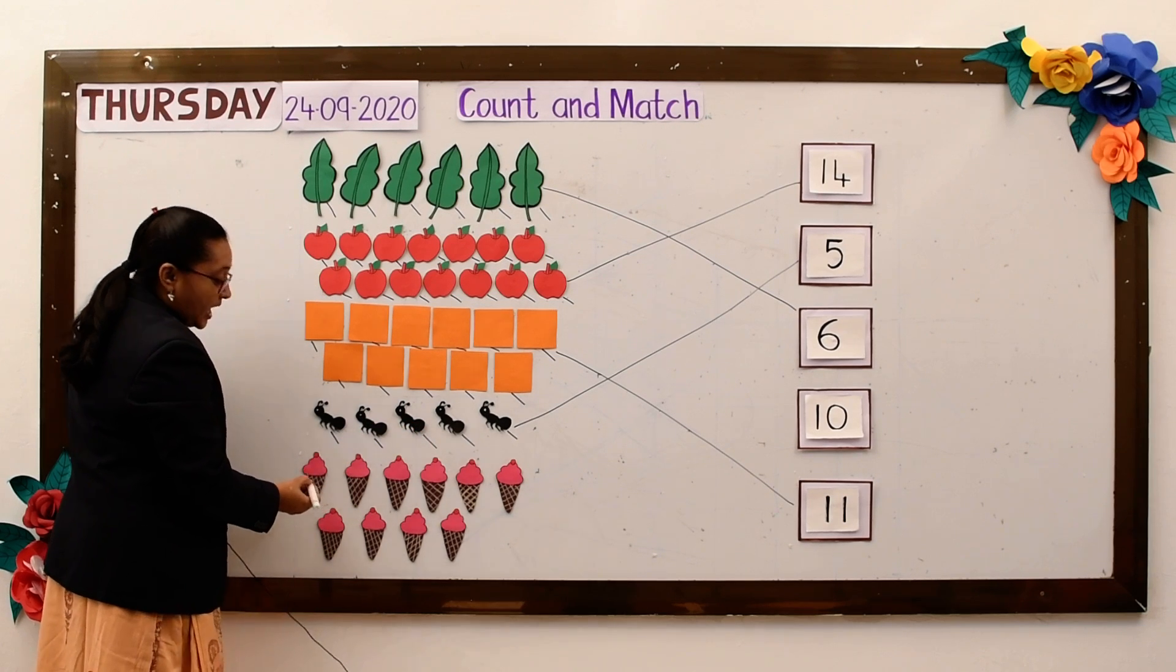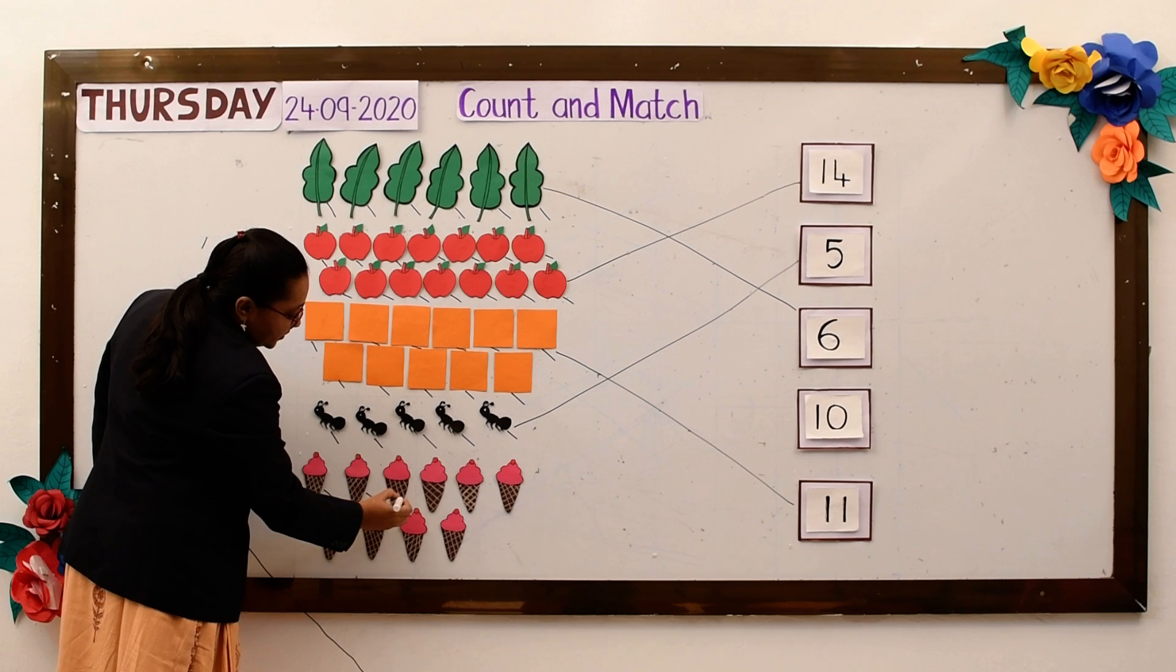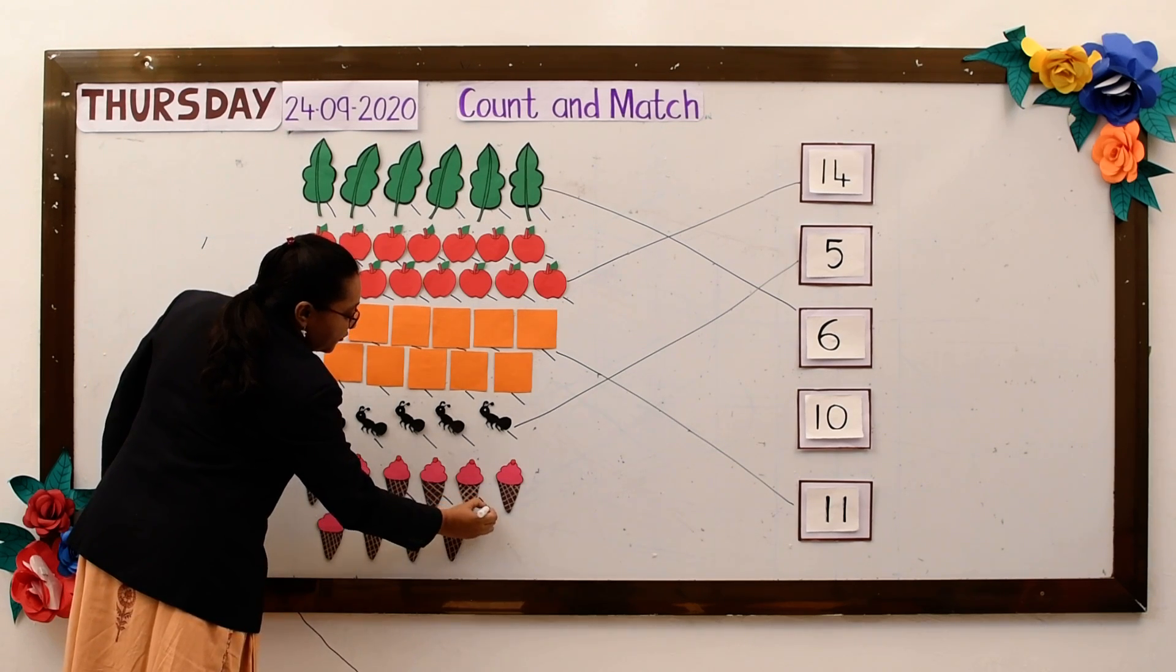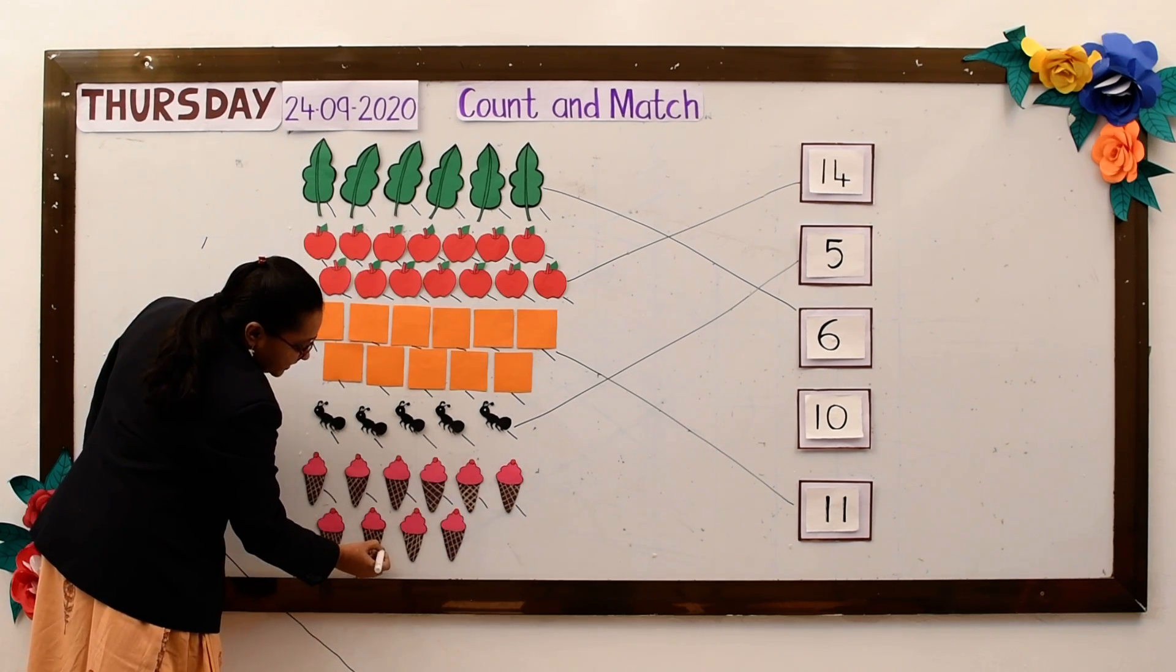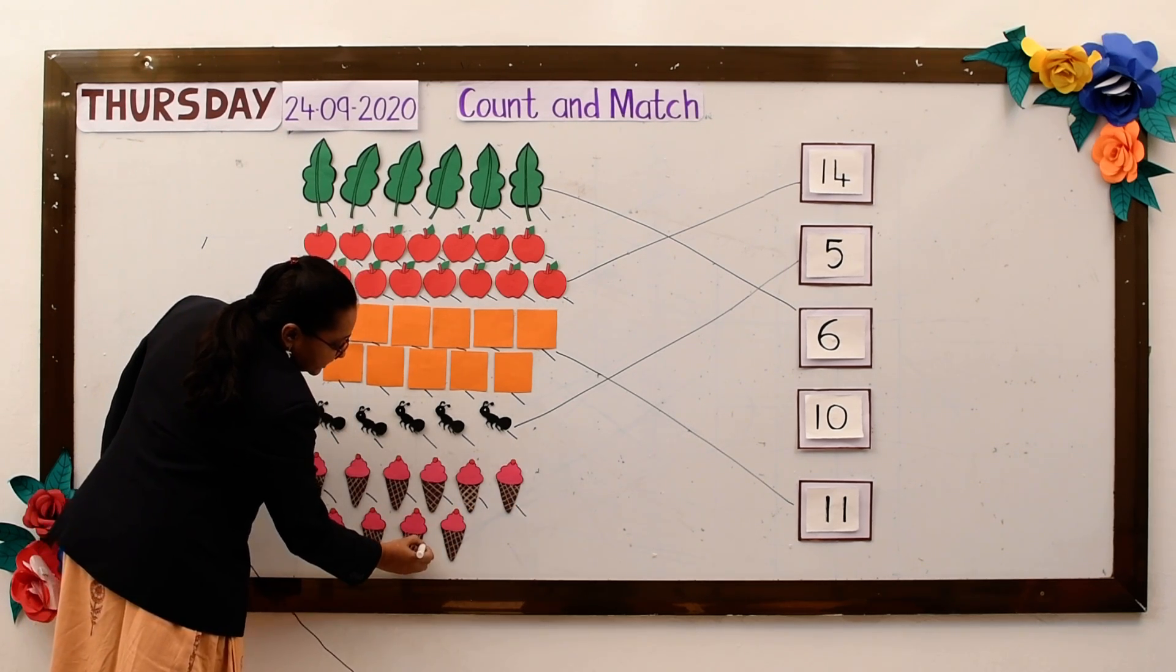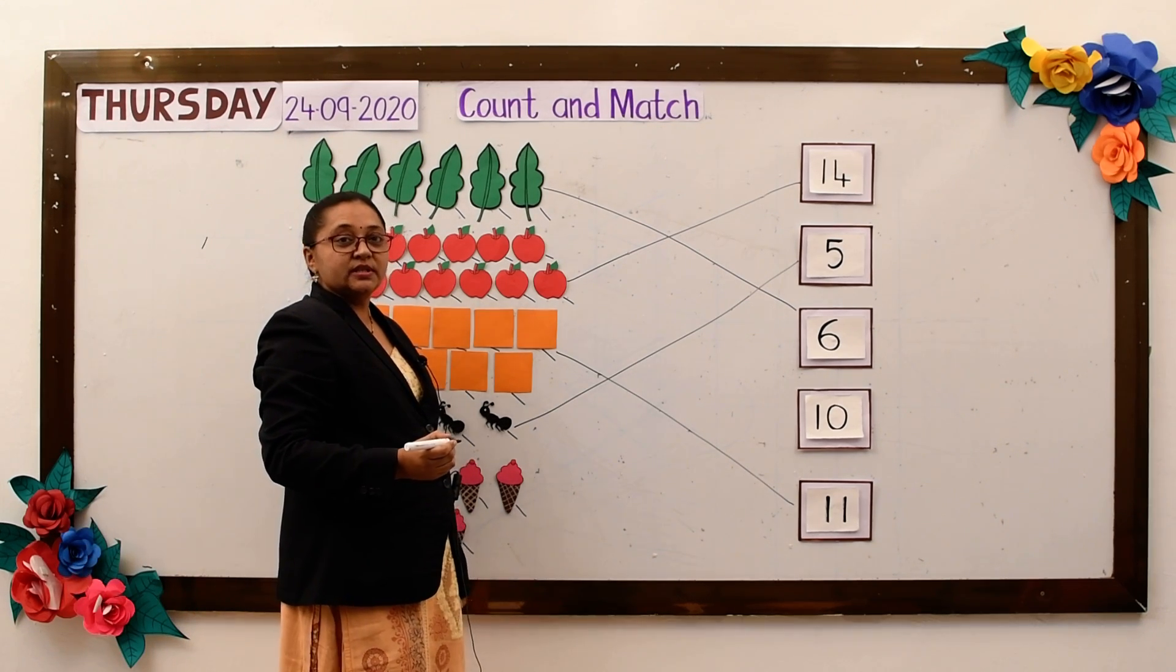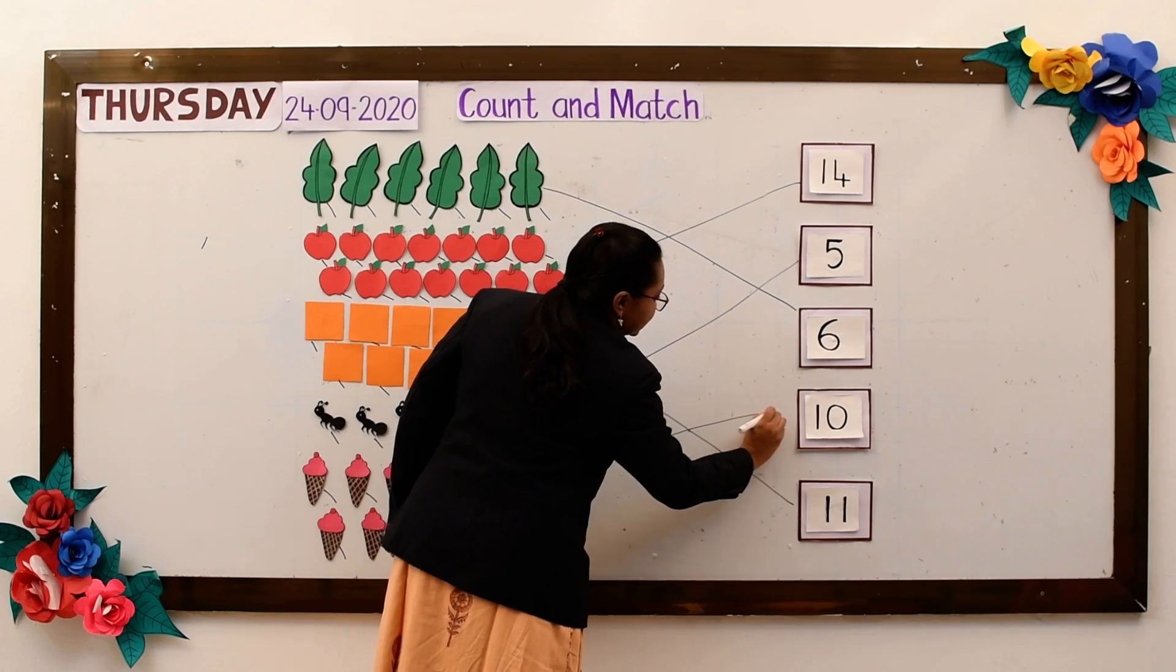Next is ice cream cone. Let's count. 1, 2, 3, 4, 5, 6, 7, 8, 9, 10. So how many ice cream cones? 10. So I will match it to the number 10.